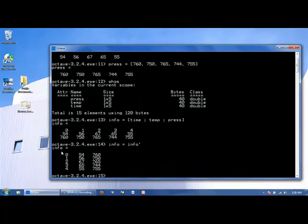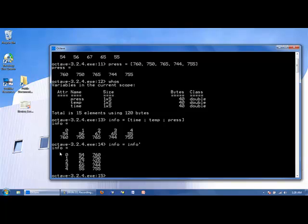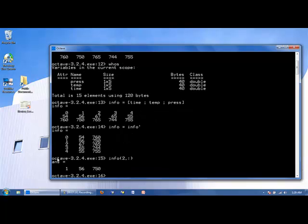This is now the array info and these are all the elements in this array. If I want all the columns from the second row, I can say the following: Info, second row, all the columns. If I want all the columns from the last row, I can say end.